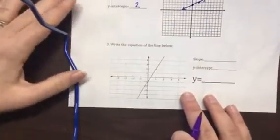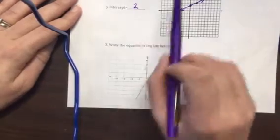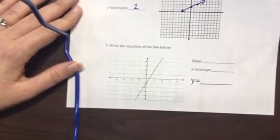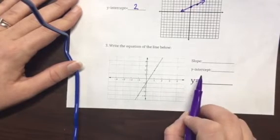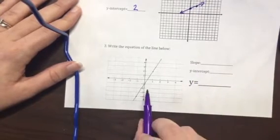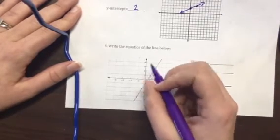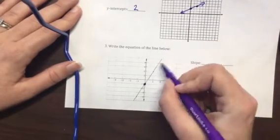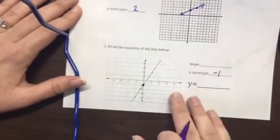Okay, at the bottom, number 3, write the equation of the line below. So this is the opposite process of what I just did up here. I have my graph and I need to write my equation. I'm going to start with my y-intercept because I think that's easier for me to see. And I can see that this line crosses through the y-axis at negative 1. So I'm looking for where does my y-axis meet my line. So I'm going to say my y-intercept is negative 1.